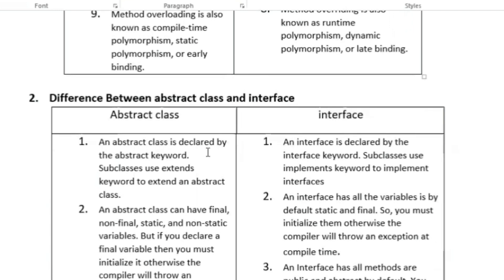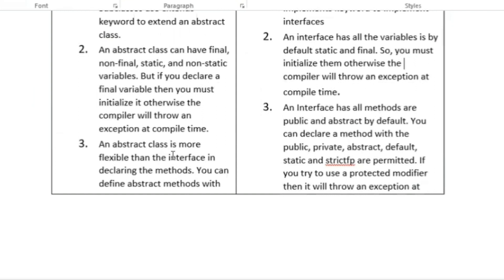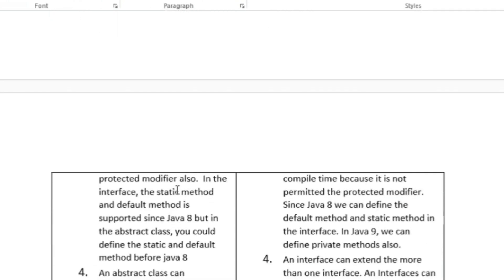An abstract class is declared by the abstract keyword, whereas an interface is declared by the interface keyword. Subclasses use the extends keyword to extend an abstract class, whereas the implements keyword is used to implement interfaces. An abstract class can have final, non-final, static, and non-static variables — if you declare a final variable you must initialize it, otherwise the compiler will throw an exception. An abstract class is more flexible than the interface in declaring methods; you can define abstract methods with the protected modifier.